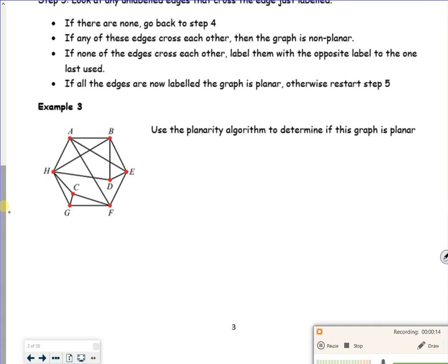So first of all, you have to identify a Hamiltonian cycle. A Hamiltonian cycle goes round through every vertex and returns to its start point as well.